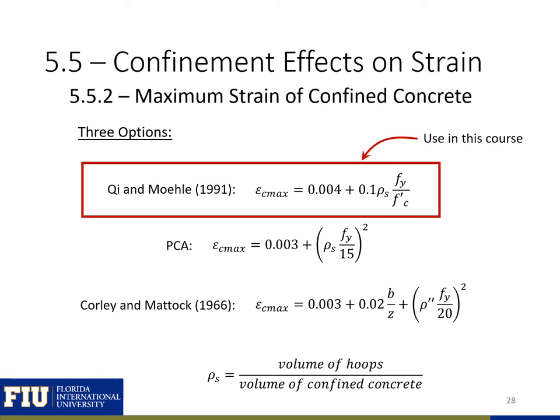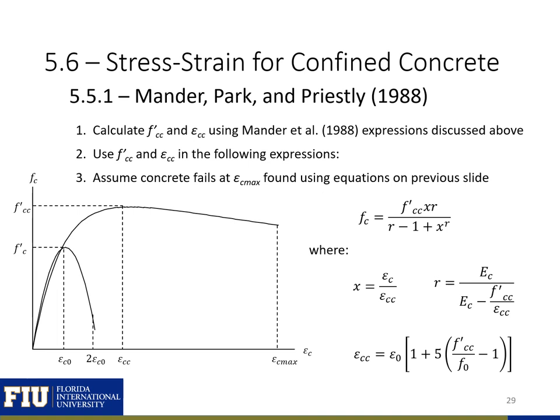There are three different expressions we can use to find the maximum strain in our confined concrete: the Priestley and Park expression from 1991, a PCA expression, and a Corley and Matic expression from the 1960s. In this class we'll use the Priestley and Park expression, which takes into account the volumetric reinforcement ratio — the ratio of the volume of our hoops to the volume of our confined concrete. We can then use the Mander, Park, and Priestley stress-strain curves by first finding our confined concrete strength and strain at ultimate, and then using their expressions to relate strain to stress for both unconfined and confined concrete.